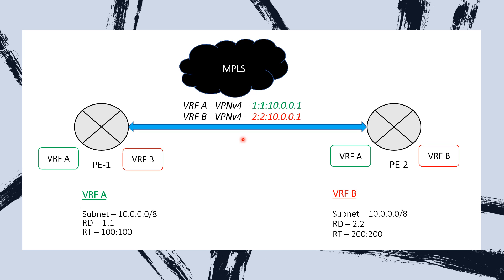Just to reiterate — this all applies to MPLS Layer 3 VPNs. In MPLS Layer 2 VPNs, we don't have VRFs, route targets, or route distinguishers. MPLS Layer 2 VPNs are altogether different. For MPLS Layer 3 VPNs, you must define VRFs, configure RDs, and configure RTs as well.